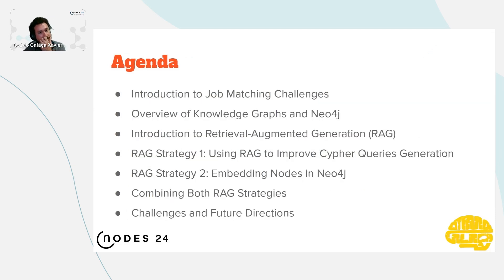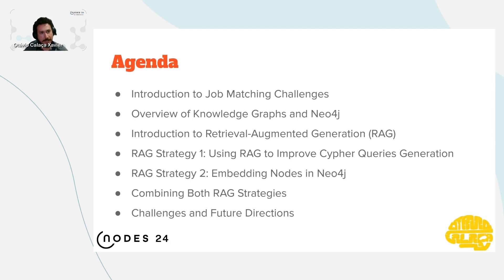So the agenda for today: I will first talk a little about job matching and the challenges we have in this field. Then we will go through knowledge graphs and Neo4j. After that, I will talk about RAG, two RAG strategies, and a way to combine them. And by the end of this talk, we will discuss implementation challenges and future directions.